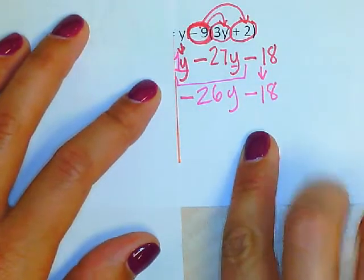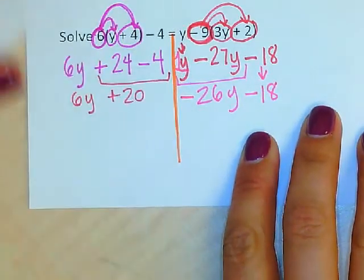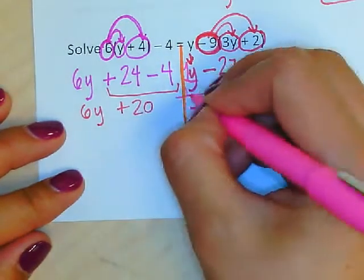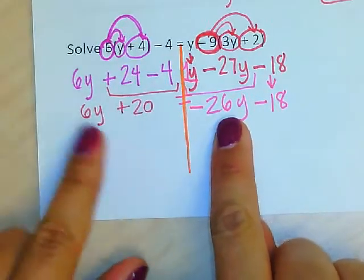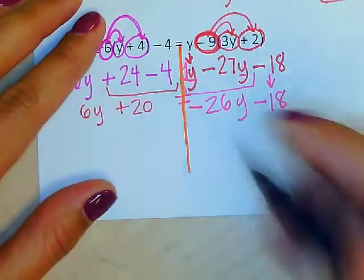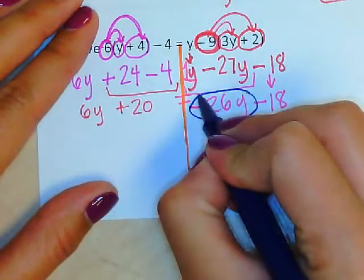Now I'm simplified all the way here. I'm going to look at the whole thing - I have both sides. I'm going to see if I have the variables only on one side. I discover that they are not on the same side. I have negative 26y and 6y, so I need to move one of them. I want to move this one over.